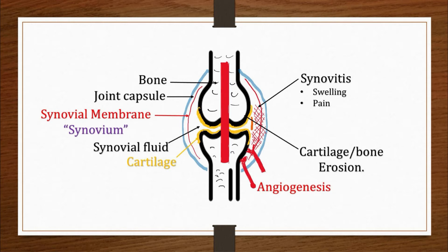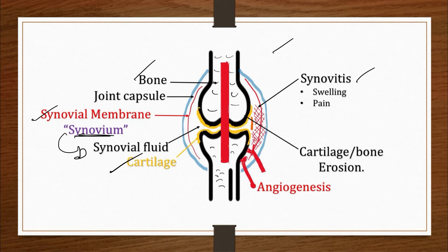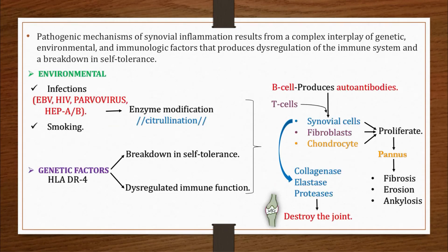Let's look at what actually happens inside the joint of a rheumatoid patient. In a finger joint, the bone is surrounded by the synovial membrane, also known as synovium, which produces synovial fluid providing nutrition and lubrication. The cartilage is shown in yellow. In rheumatoid arthritis there is inflammation of the synovium — synovitis — causing swelling and pain, erosion of cartilage and bone, and increased vascularity and angiogenesis, making it a systemic arthritis.